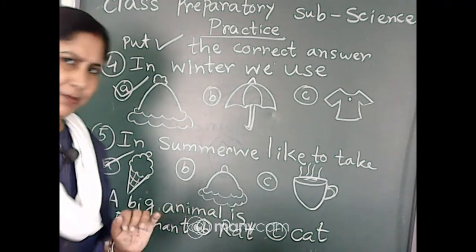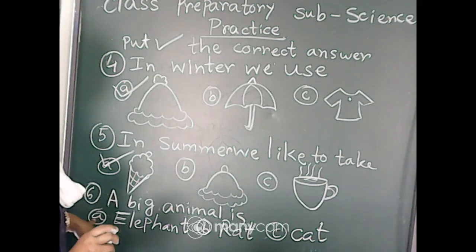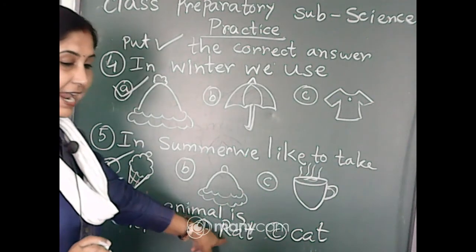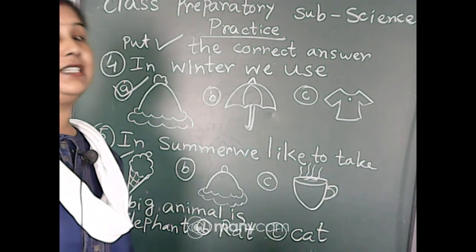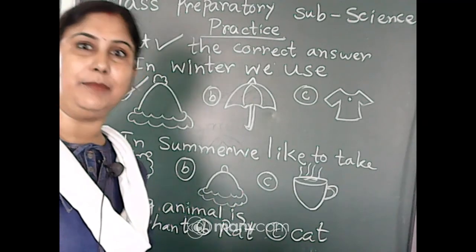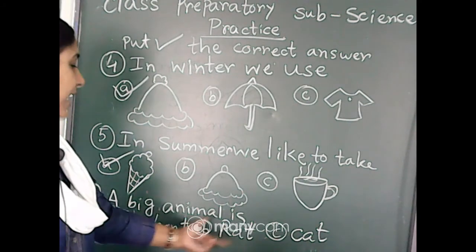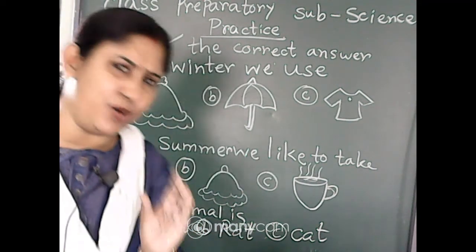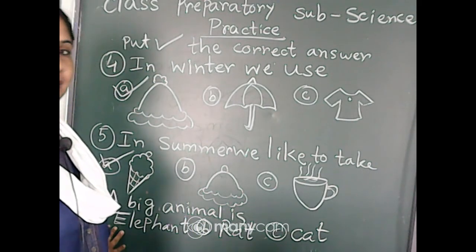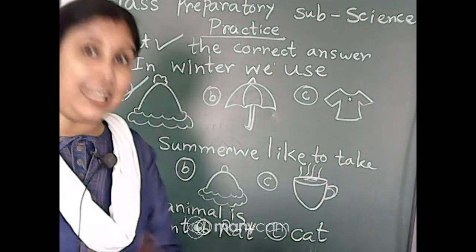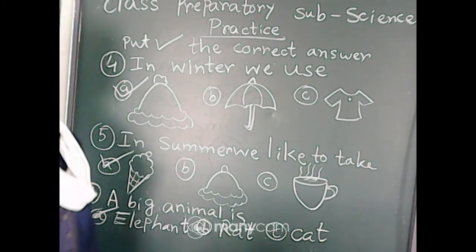And last one, number six: A big animal is... Here we have three options: A is elephant, B is rat, and C is cat. We know the elephant is the largest or biggest land animal. So we can obviously know the big animal is elephant. Rat and cat are very small animals. So we can write down that elephant is the correct answer.